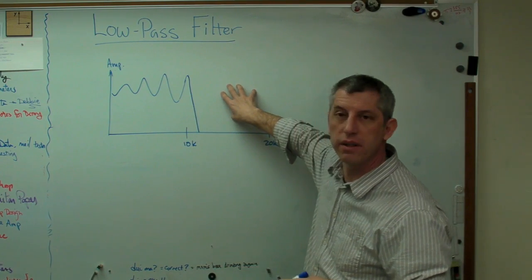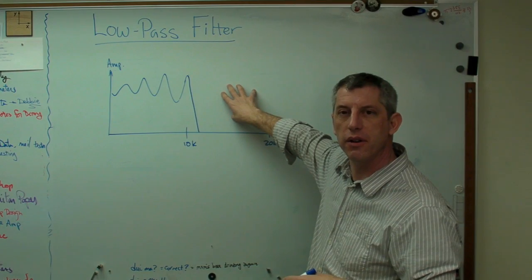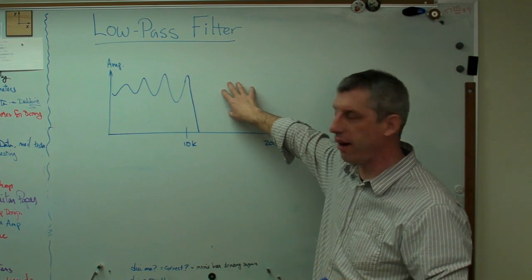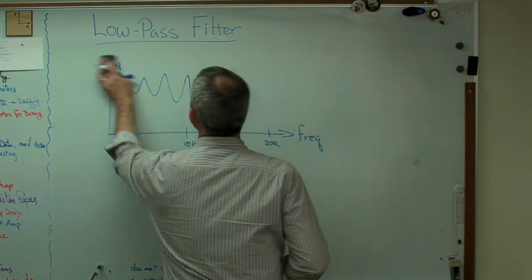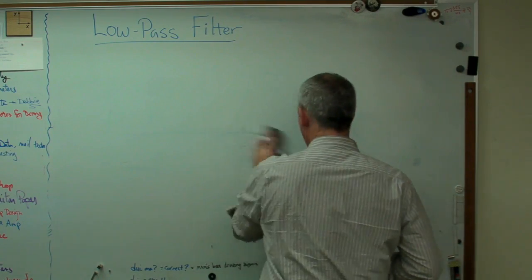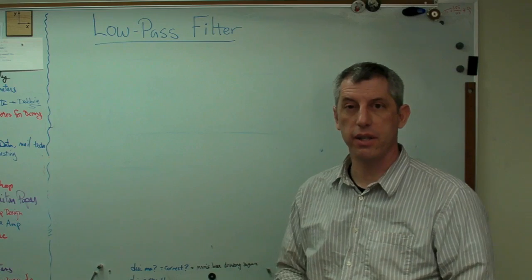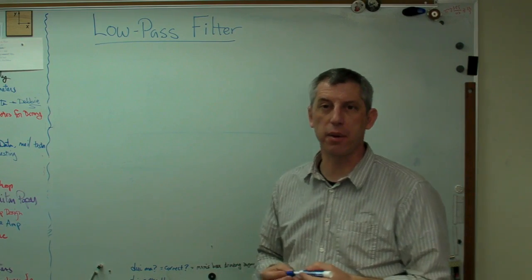And of course my students can send each other signals at these frequencies and I can't hear it. So that's what a low-pass filter does. It just kills off high frequencies. The low frequencies pass.